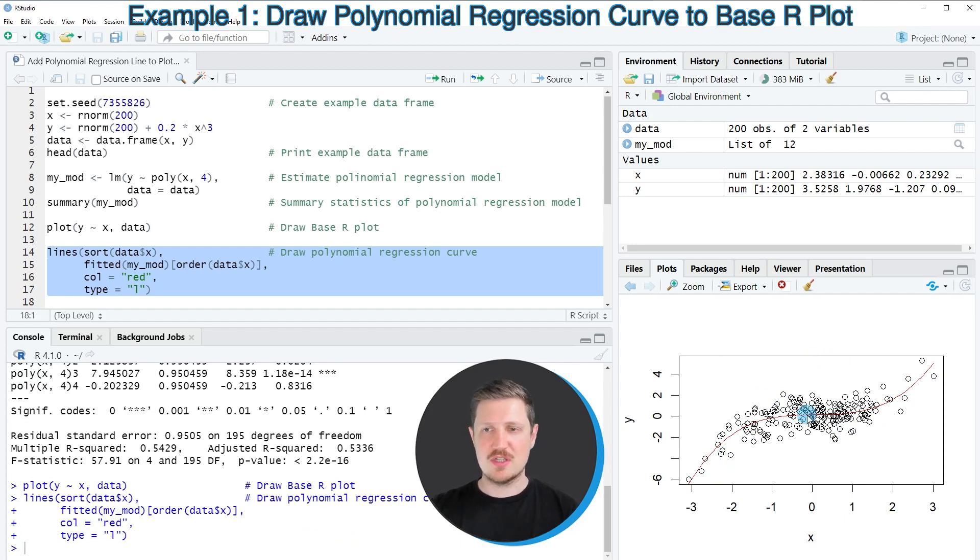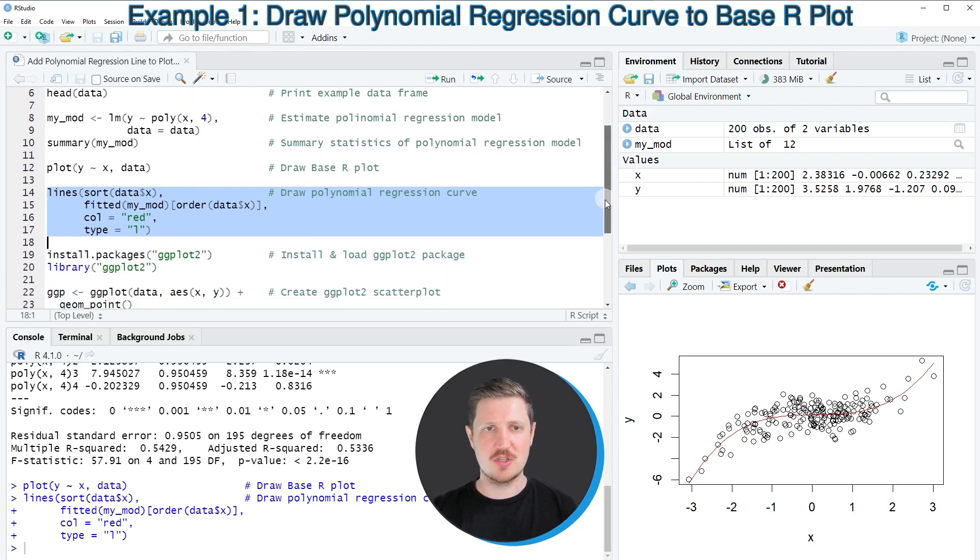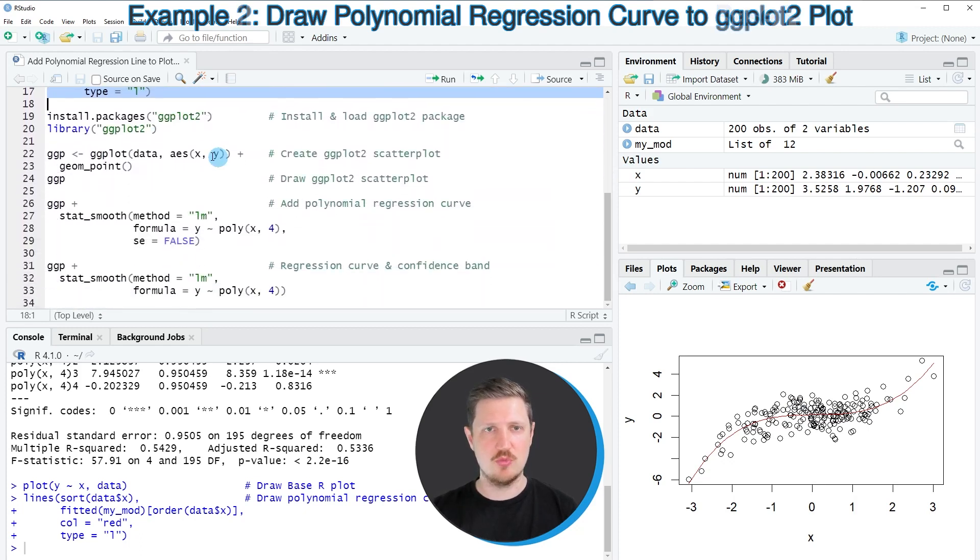In this first example I have explained how to use the basic installation of the R programming language to add a polynomial regression line. However, it's also possible to use the ggplot2 package for this task and this is what I want to show you in the second example starting in line 19 of the code.